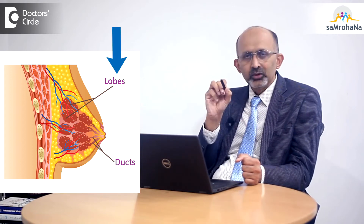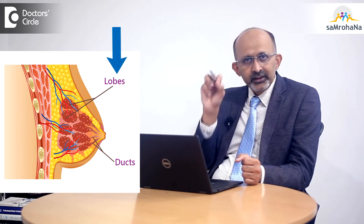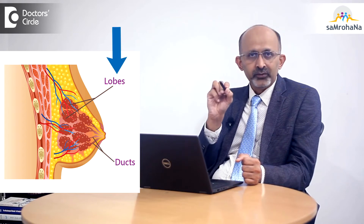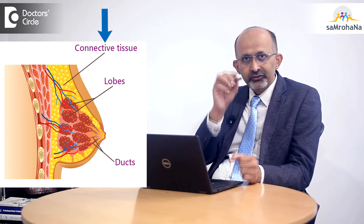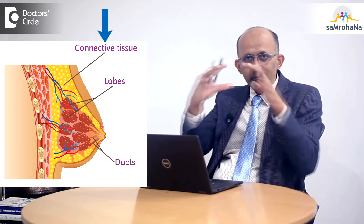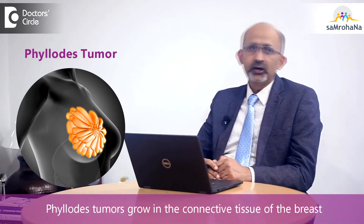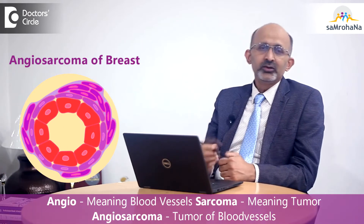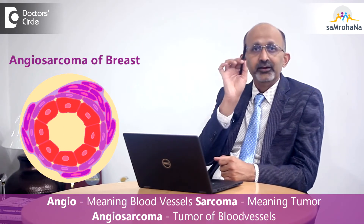Cancer can also arise in the lobules of the breast — the area where milk is formed — and that is called lobular carcinoma of the breast. Or it can arise from the connective tissue holding the breast together, which is called a phyllodes tumour. There is also a rare entity called angiosarcoma of the breast, which arises from the blood vessels of the breast.